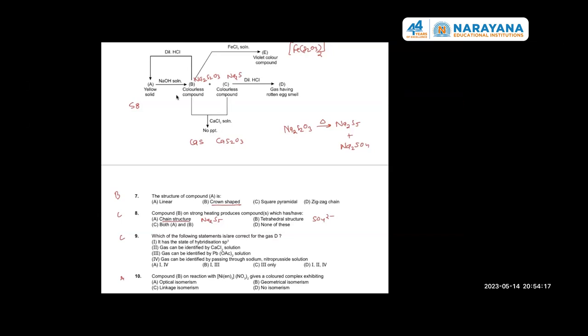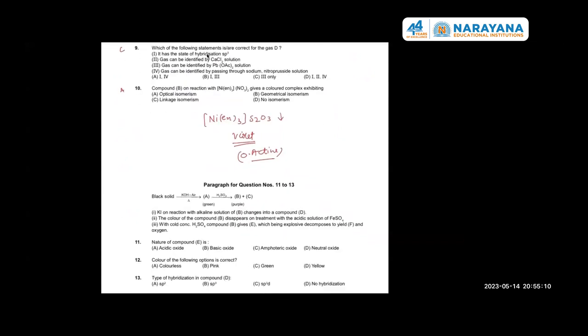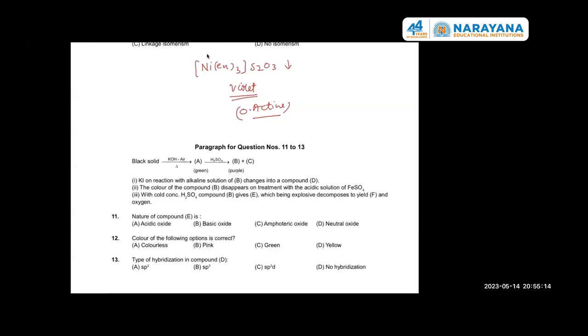Gas D can be now easily identified. Question number 9 is clear. In question number 10, the compound will be giving Ni(en)3(S2O3) precipitate only. So this is a violet color complex. This violet color complex is actually optically active because it is having en as a ligand. Three en ligands will form octahedral geometry in which it will be optically active. So linkage isomer will not be the answer, answer will be optical isomer only. With Prakash, it is clear? Yes, sir.